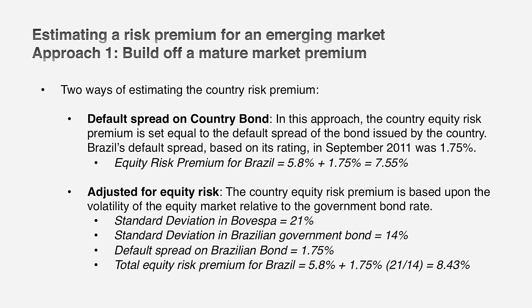The Brazilian equity index is about 1.5 times more volatile than a Brazilian bond — that's 21 divided by 14. Scaling up the default spread of 1.75% for that additional risk gives about 2.63%. Adding that 2.63% to the base premium for the US — let's assume 5.8% based on the implied premium — gives an equity risk premium for Brazil. To recap: start with a mature market premium, look up the default spread for the country, scale that spread up if you can, and add it to the mature market premium to get an equity risk premium for that country.